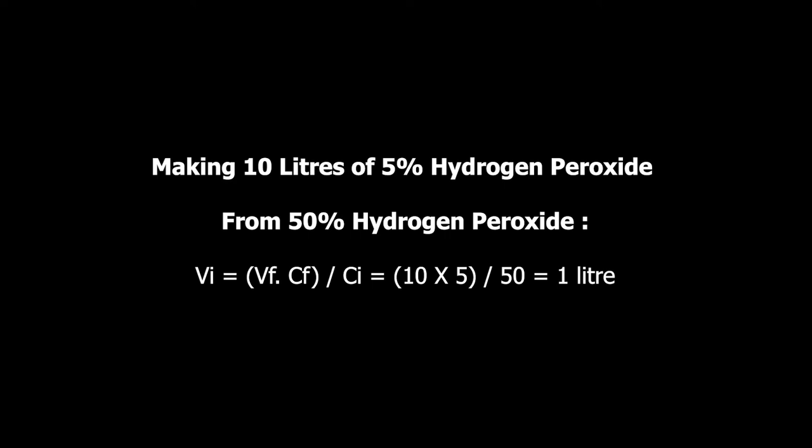Let's consider making 10 liters of 5% hydrogen peroxide from 50% hydrogen peroxide. VI equals VF times CF over CI. Replacing: VF is 10, CF is 5, CI is 50 — so it's 10 times 5 over 50. Punch your calculator — we get 1 liter. So the VI to be used here is 1 liter.